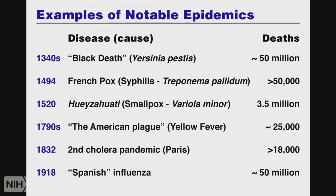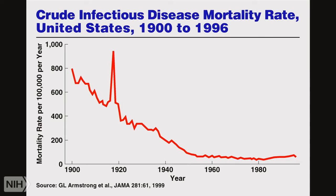Over the years there has been an amazing amount of progress in the control of infectious diseases — everything from germ theory recognizing that microbes cause diseases, to changes in sanitation, hygiene, vector control, the discovery of antimicrobials, development and implementation of vaccines, and our ability to monitor and detect infections. Because of all of this, we've seen a dramatic decrease in mortality rates due to infections. If you take the United States as an example, it's gone all the way down, though globally the picture is much different.